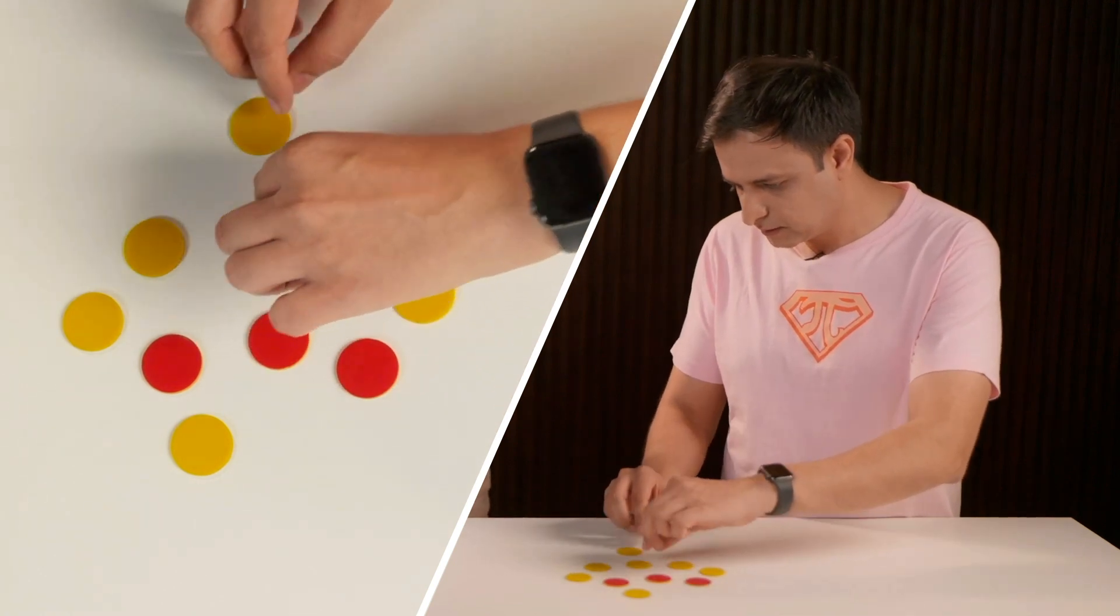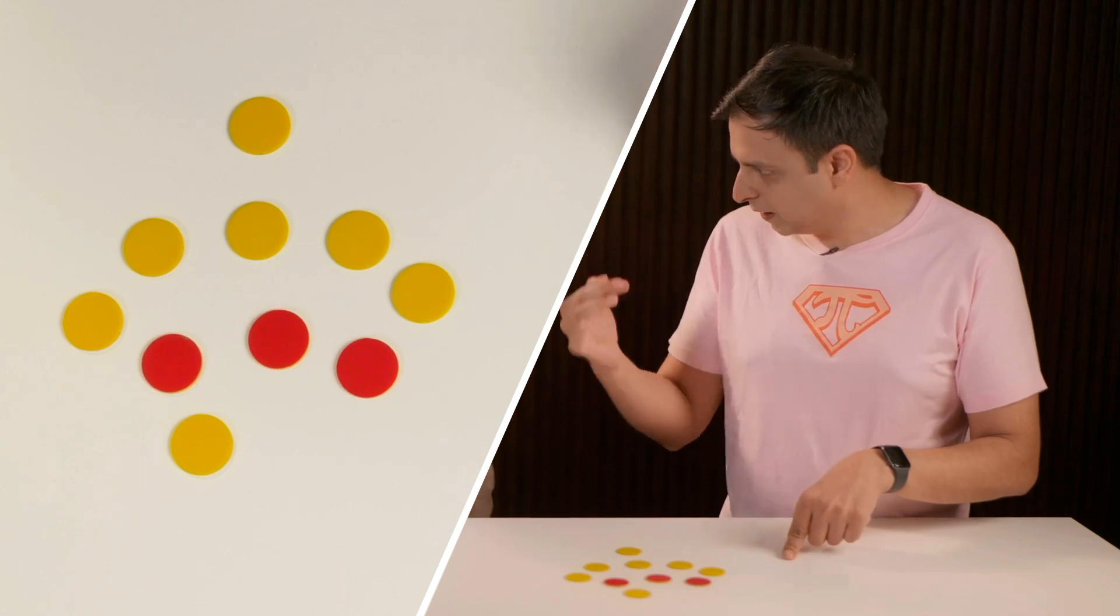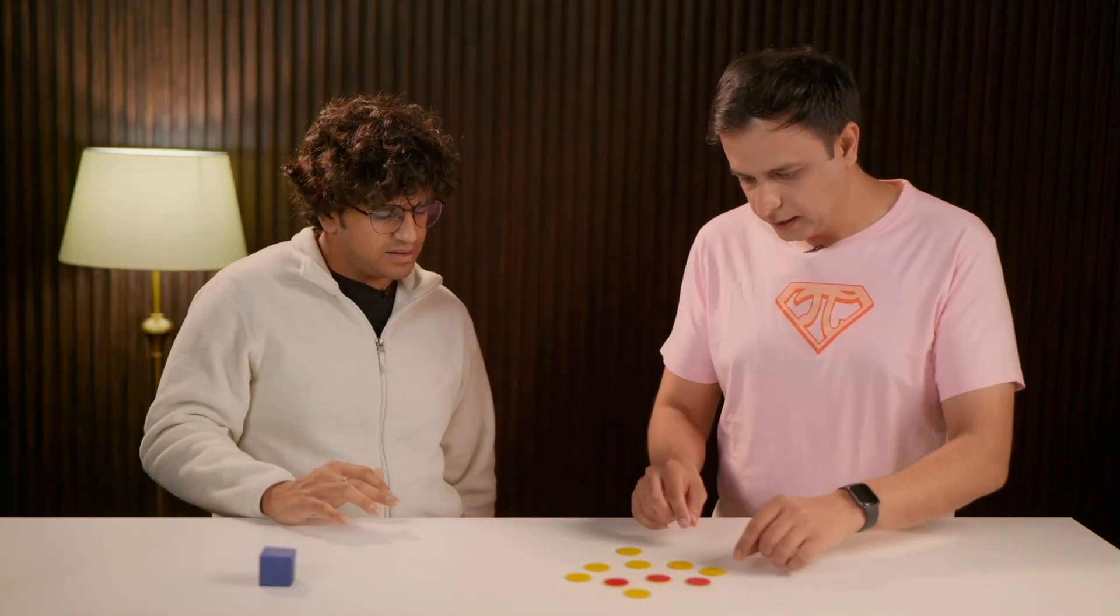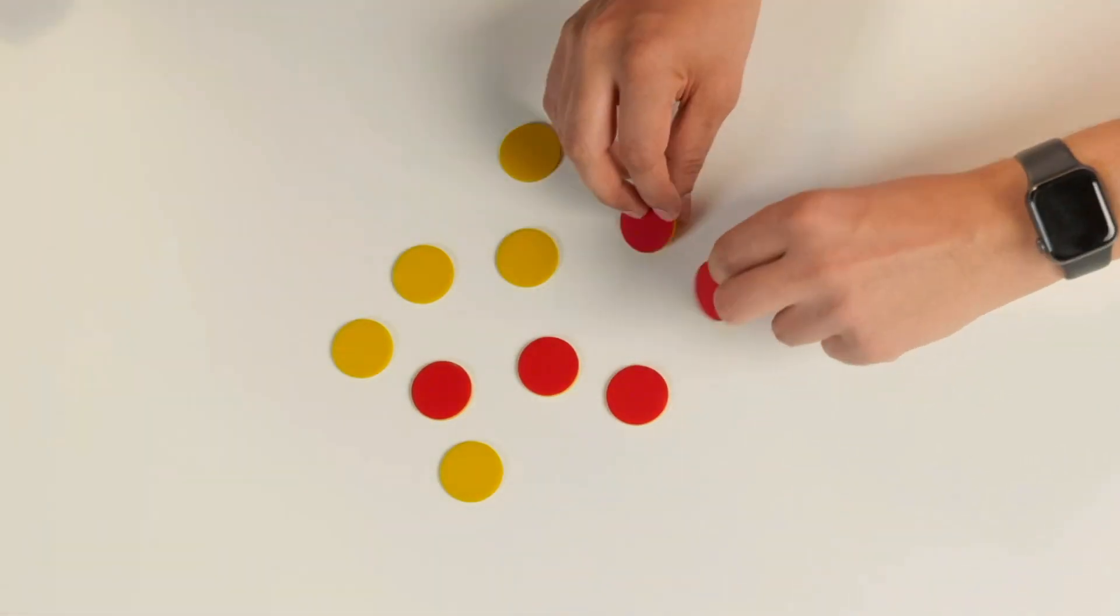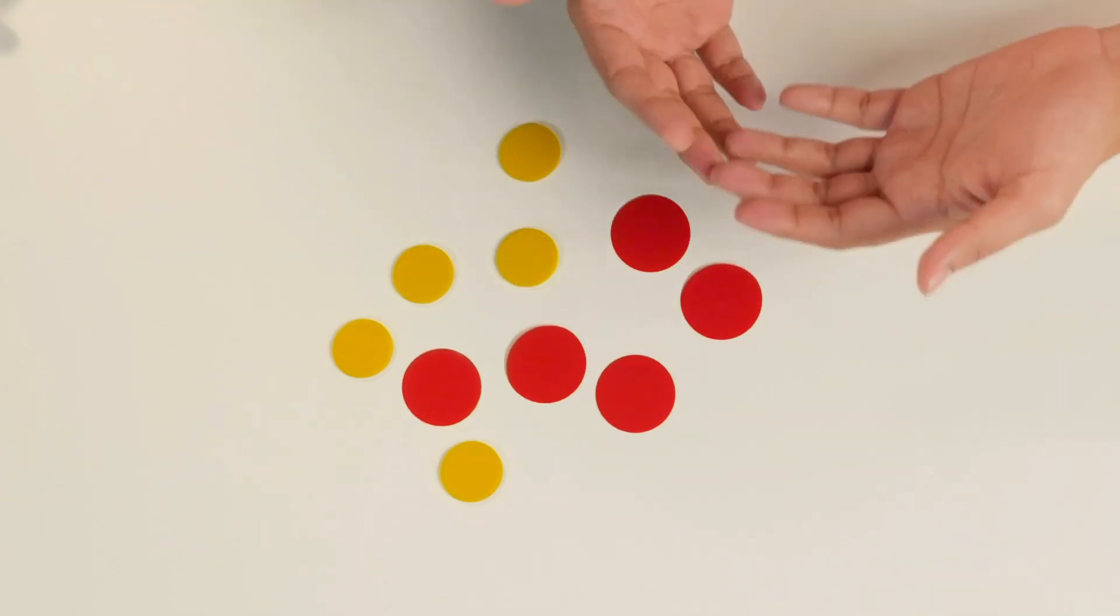So if I flip two red coins, what happens to the number of reds? It became three. It became three. So it went down from five to three. If I flip a pair of yellow coins, now what happens? Increase by two. Okay. So it went from three to five.